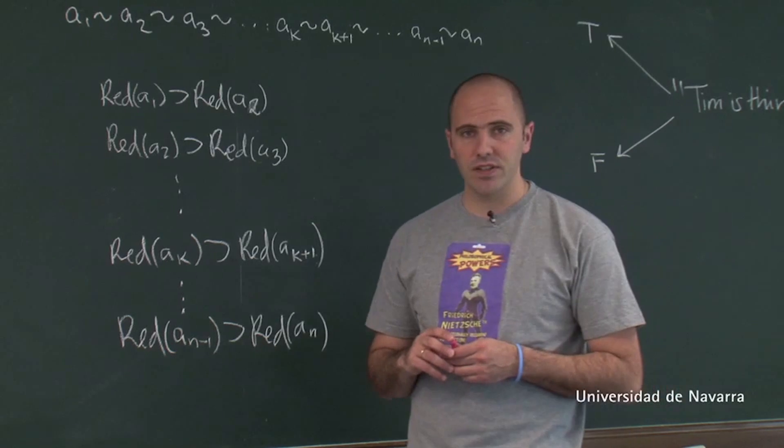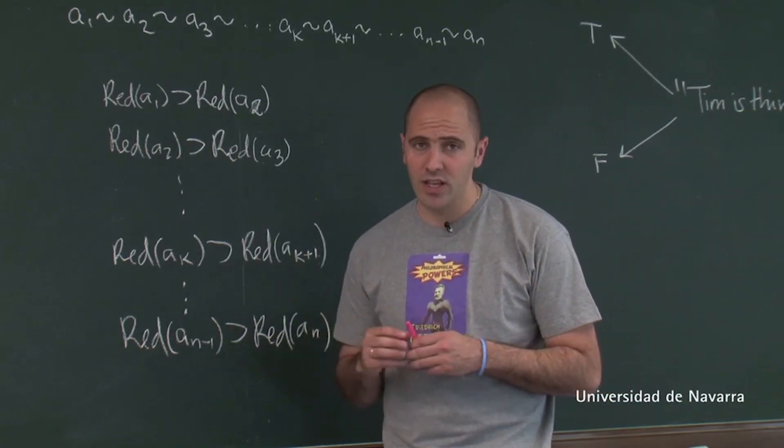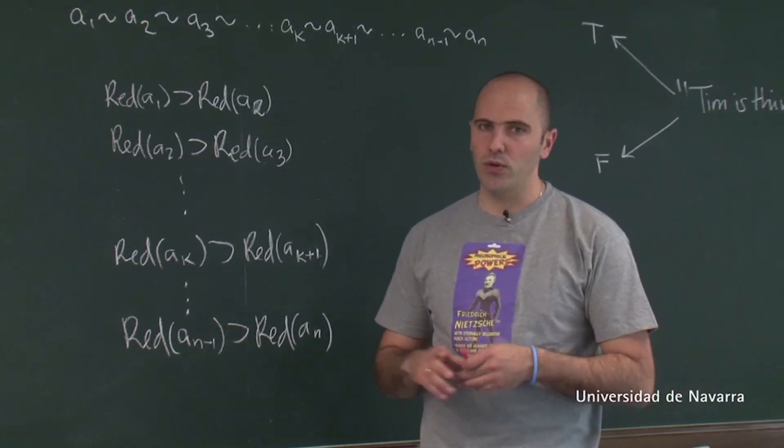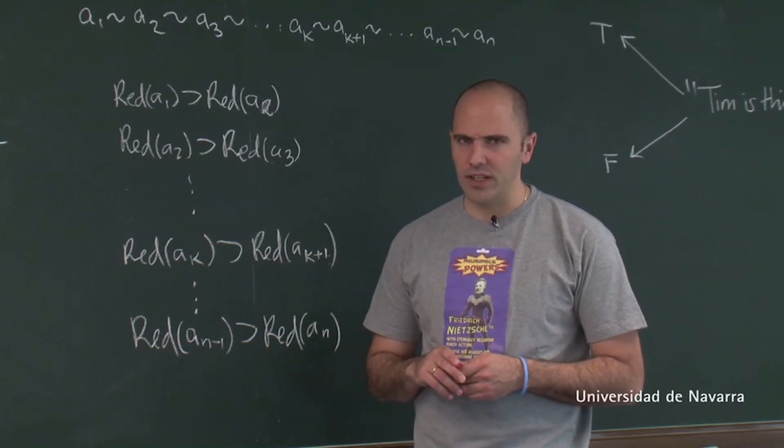and we are going to consider the first paradox we are going to discuss in this course, which is the sorites paradox, and the problem of vagueness broadly considered. Now, let's go for the sorites paradox.